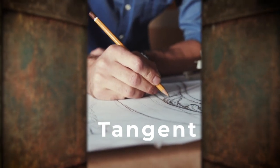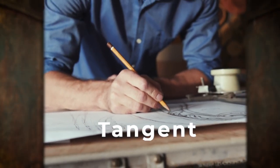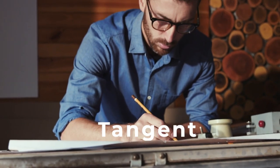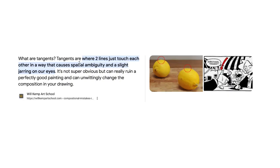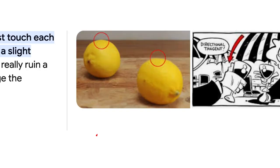It is likely that the thing that is bugging you about your painting is actually called a tangent. Today I'm going to talk about what tangents are and how we can avoid them in our paintings to make our work even stronger. Tangents are where two lines just touch each other in a way that causes spatial ambiguity and a slight jarring to our eyes. It's not super obvious, but it can ruin a perfectly good painting.